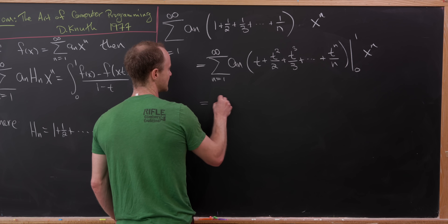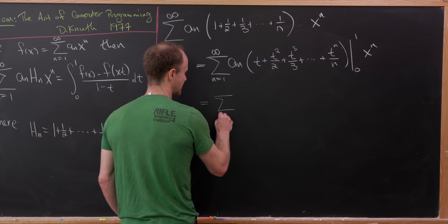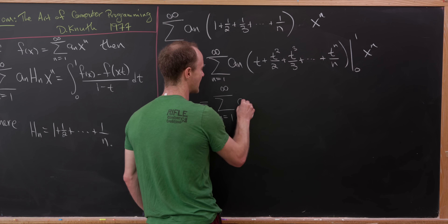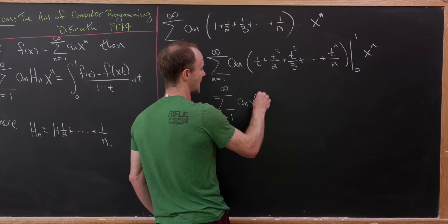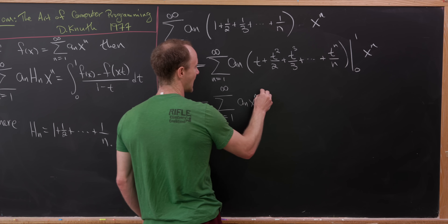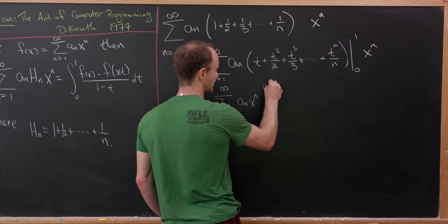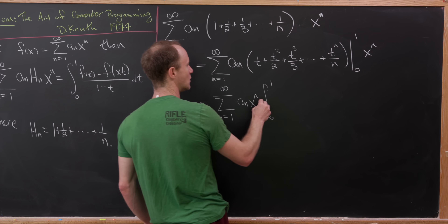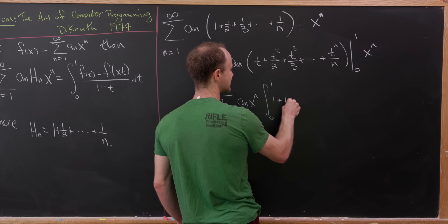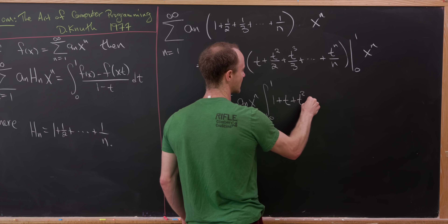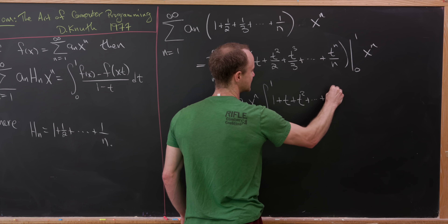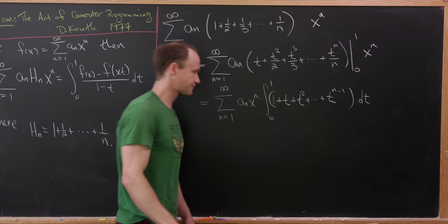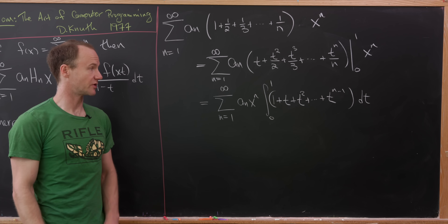We'll have the sum as n goes from 1 to infinity of a_n times x to the n, and this becomes the integral from 0 to 1 of 1 plus t plus t² ending up at t^(n-1) dt. That's looking pretty good.